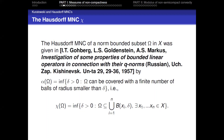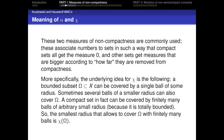The Hausdorff measure of non-compactness of a norm-bounded subset Ω in X was first given by Goldberg, Goldstein, and Marcus in 1957. It is defined as the smallest radius that allows covering Ω with finitely many balls. These two measures of non-compactness are commonly used; they associate numbers to sets such that compact sets all get measure zero, while other sets get larger measures according to how far they are from compactness.